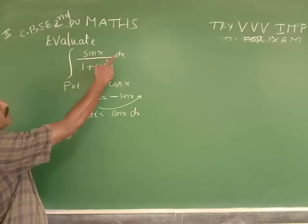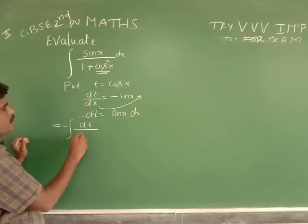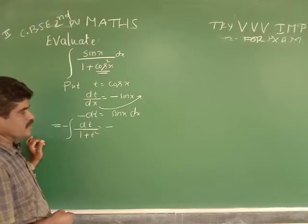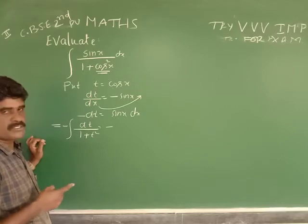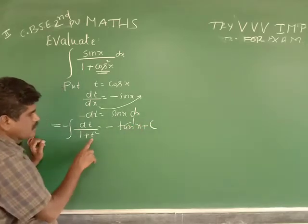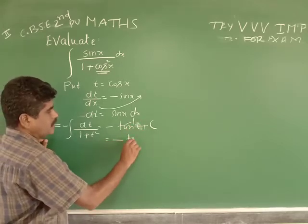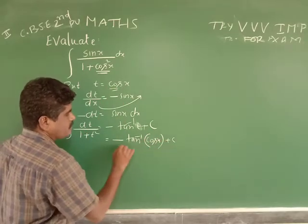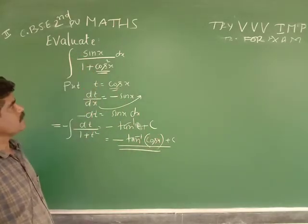The integration of sin(x) dx becomes minus dt, so we get minus the integration of dt divided by 1 plus t². We know that the integral of dt/(1+t²) is tan⁻¹(t). So the answer is minus tan⁻¹(t) plus C. Substituting back t equals cos(x), the result is minus tan⁻¹(cos x) plus C. That is the integration of sin(x)/(1+cos²x).